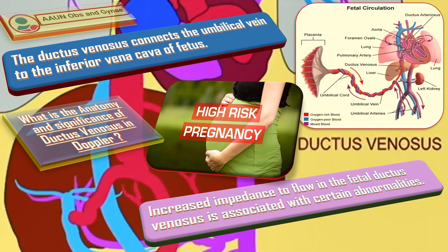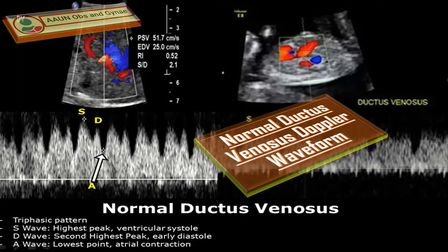Ductus venosus Doppler is a useful tool to detect all these abnormalities. The typical Doppler waveform of the ductus venosus shows continuous triphasic forward flow throughout the cardiac cycle, with the highest peak during systole represented by the S wave. Another peak is during the diastolic filling phase, represented by the D wave, and the third wave is the A wave, which represents atrial contraction.